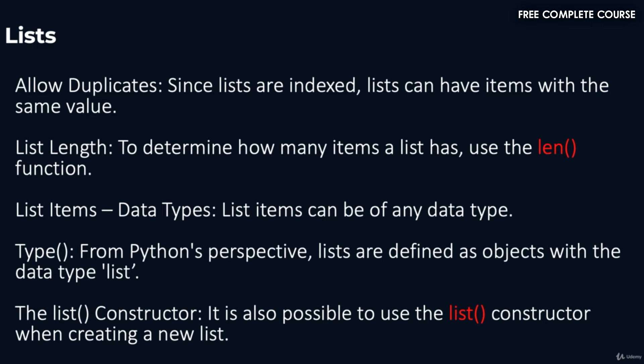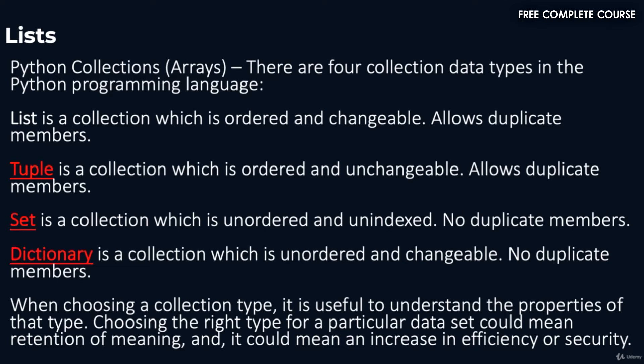Since lists are indexed, lists can have items with the same value. To determine how many items a list has, use the len function. List items can be of any type. From Python's perspective, lists are defined as objects with the data type list. It is also possible to use the list constructor when creating a new list.